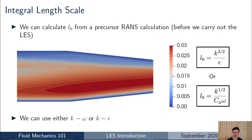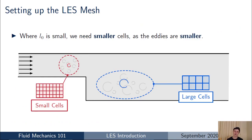You go into your post-processor — ParaView, FieldView, Fluent Post, or CFX Post — and define a new field for the integral length scale as that ratio of turbulent scalars. Plotting it on the field gives a contour plot in meters; the red region shows an integral length scale of around 0.03 m, smaller in the blue regions. So we've run our RANS calculation and used k and epsilon (or omega) to calculate the integral length scale throughout the entire flow field.